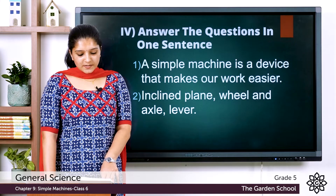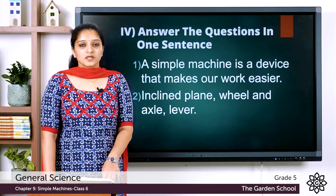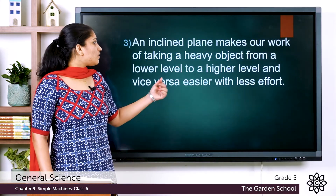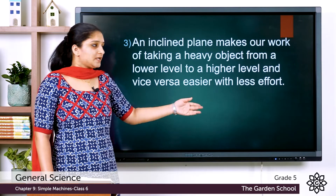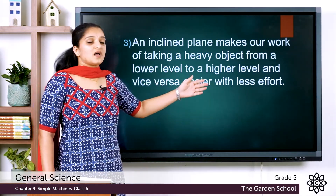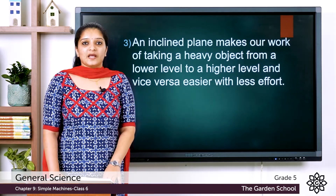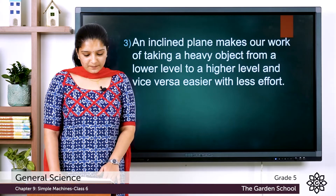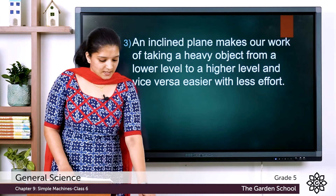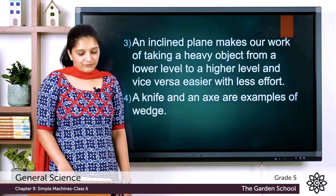The third question: why is an inclined plane called a simple machine? The answer is an inclined plane makes our work of taking a heavy object from a lower level to a higher level and vice versa easier with lesser effort. That's why an inclined plane is called a simple machine. The fourth question: name any two tools which are wedges. The answer is a knife and an axe are examples of a wedge.